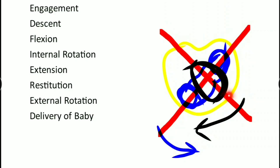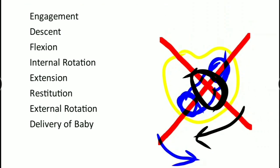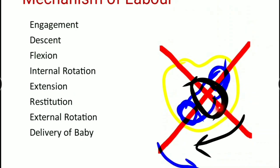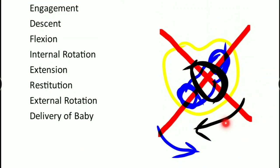In the usual case - the left occipital anterior position - the head has to rotate one-eighth of the circle in the clockwise direction. After delivery of the head, the shoulder also has to rotate one-eighth of the circle but in the anti-clockwise direction, the opposite direction.